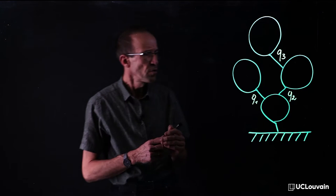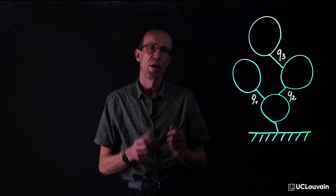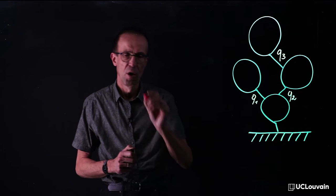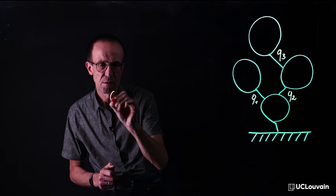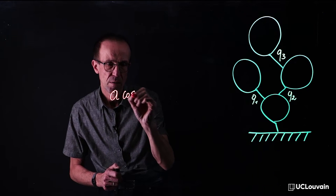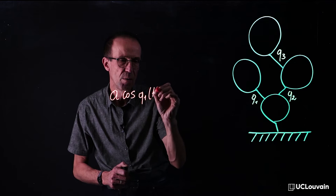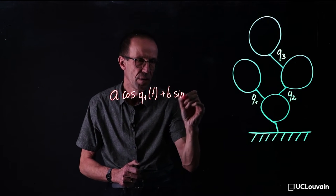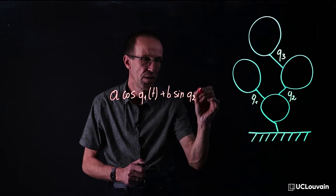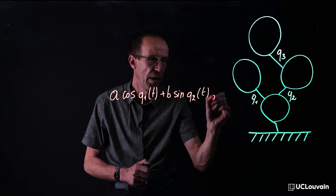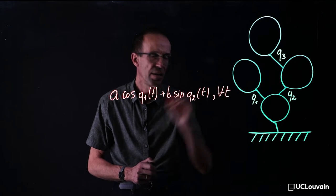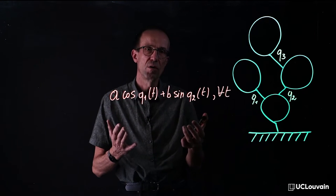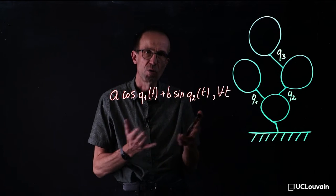However, most applications required to satisfy relationships between these coordinates, such as, for instance, a non-linear relation between Q1 and Q2 involving sine and cosine functions. This kind of relationship is called an algebraic constraint.